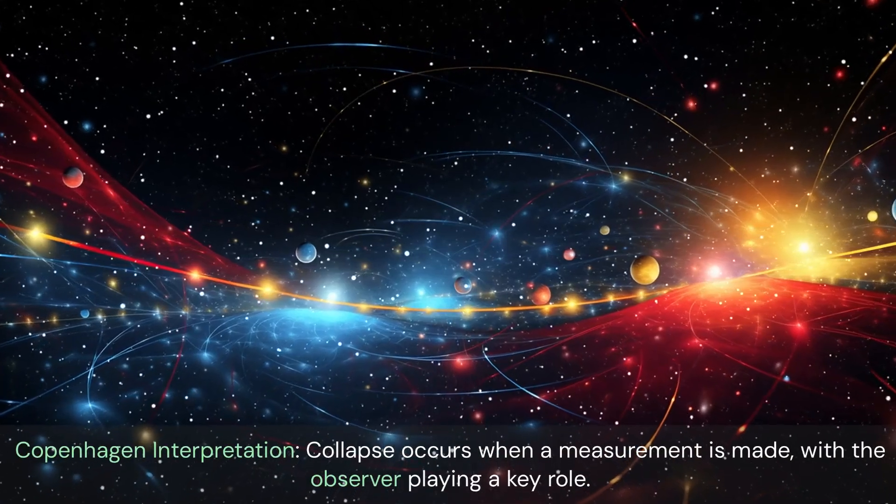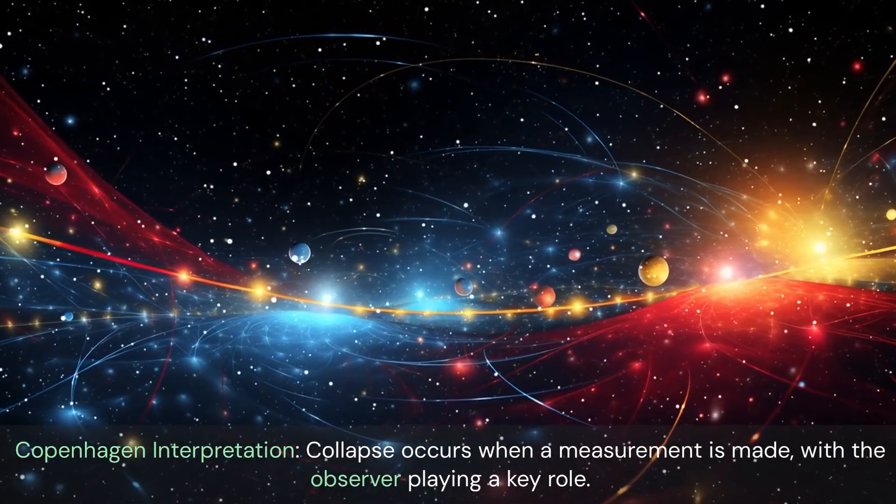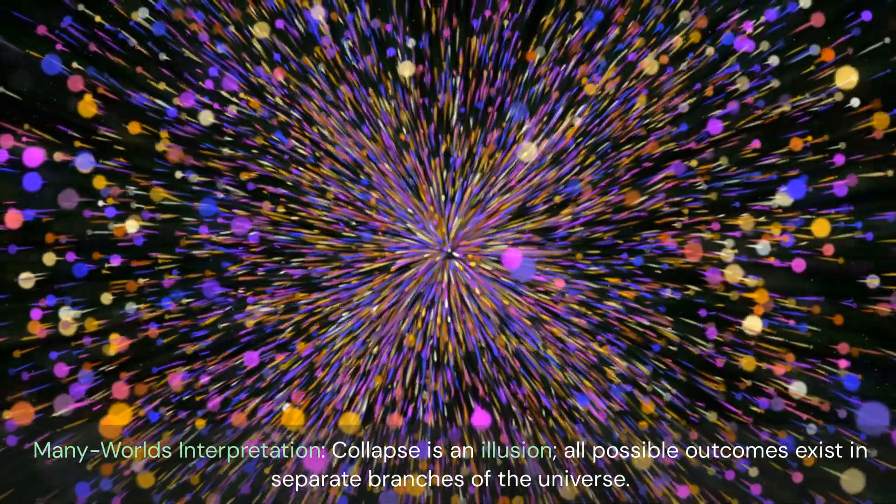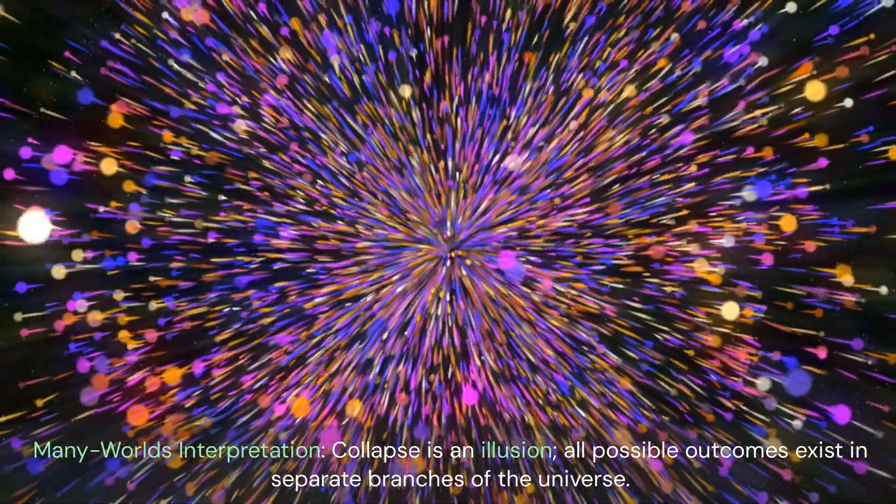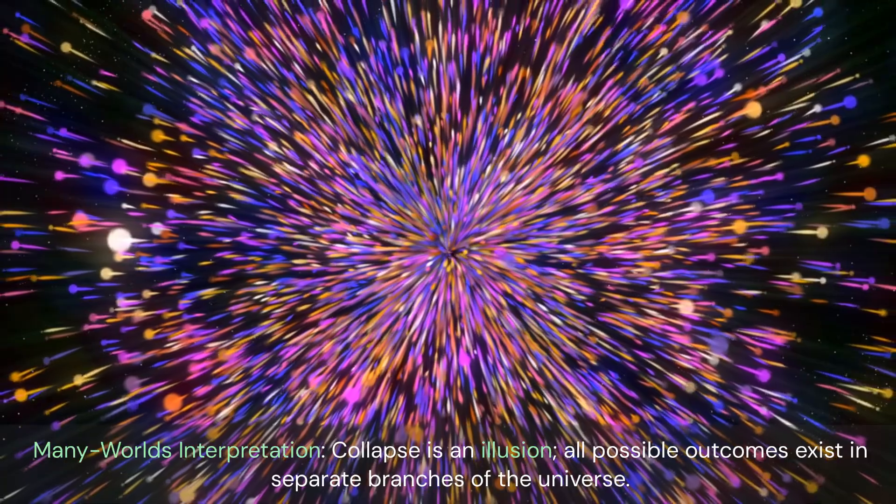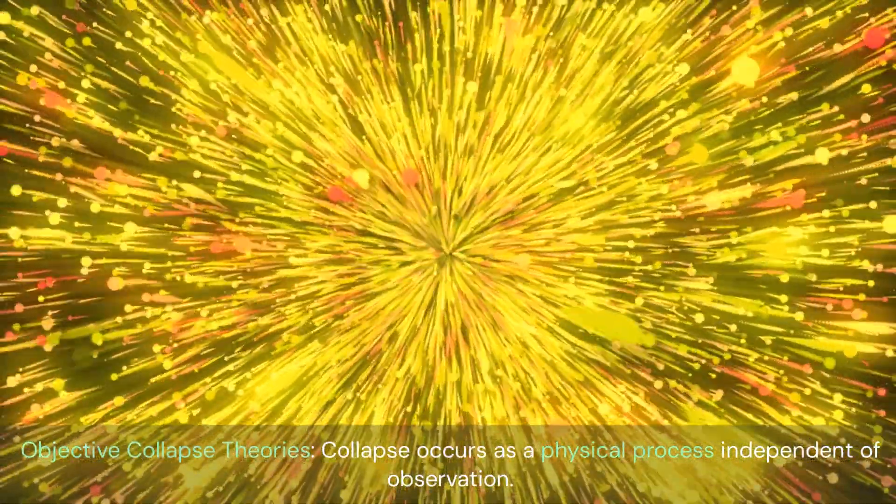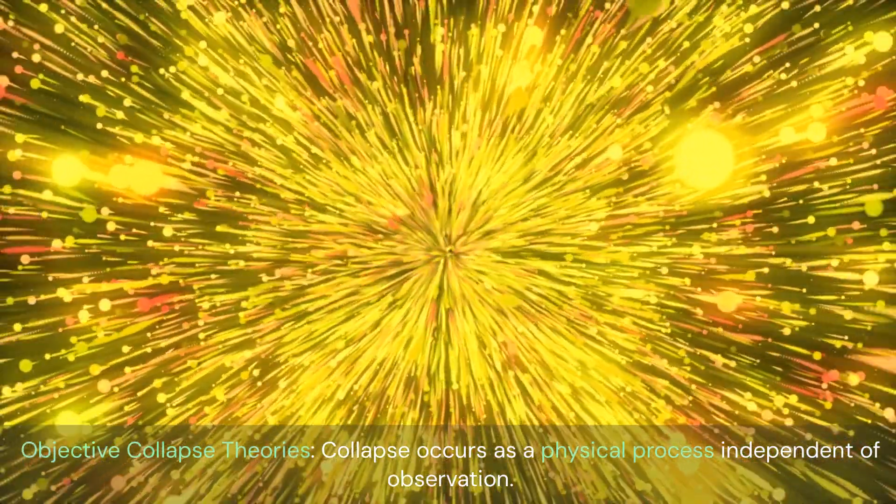Copenhagen interpretation: collapse occurs when a measurement is made, with the observer playing a key role. Many worlds interpretation: collapse is an illusion; all possible outcomes exist in separate branches of the universe. Objective collapse theories: collapse occurs as a physical process independent of observation.